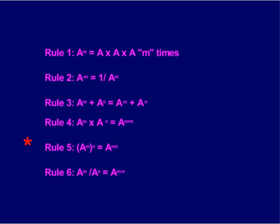Now rule number five, a to the m raised to the power of n is a to the m times n. The only time you multiply exponents is when you're raising a power to a power.